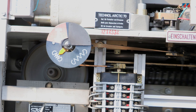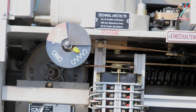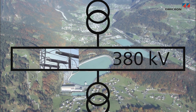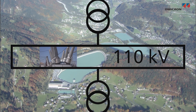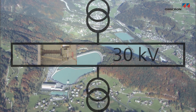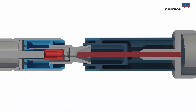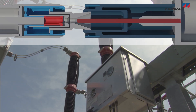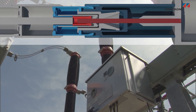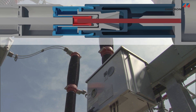Circuit breakers allow the flow of energy to be controlled by safely switching currents on and off at all voltage levels of the energy grid. In the open position they have to ensure isolation across the switching distance between phases and to ground. In the closed position they have to allow the energy to flow with minimum losses.